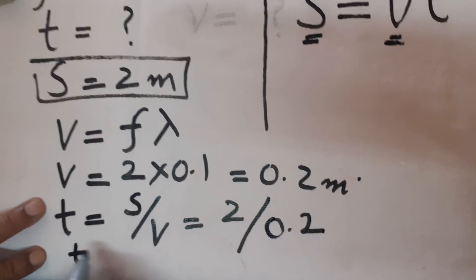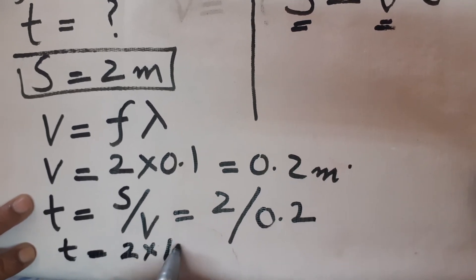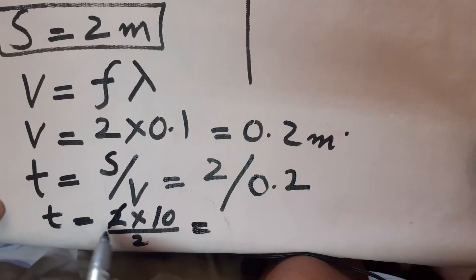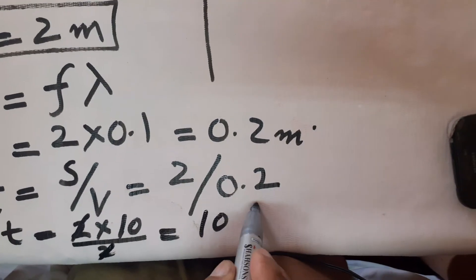So t will be 2 divided by 0.2. This gives us 10 seconds.